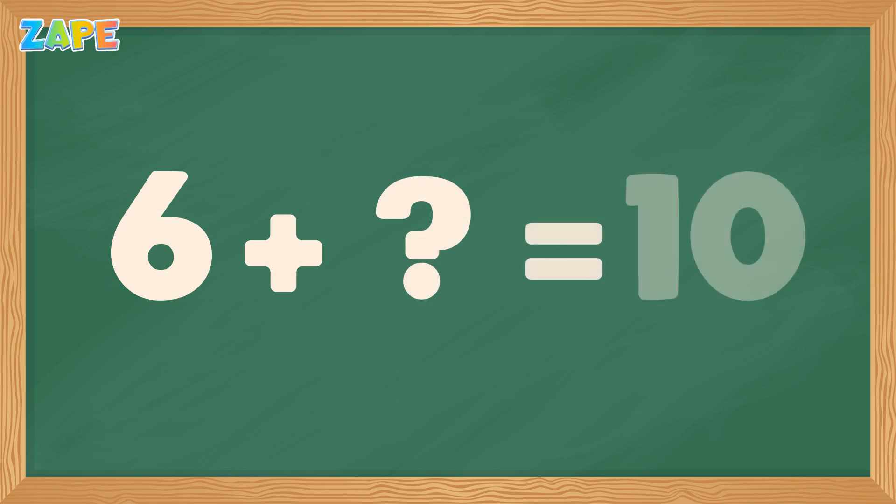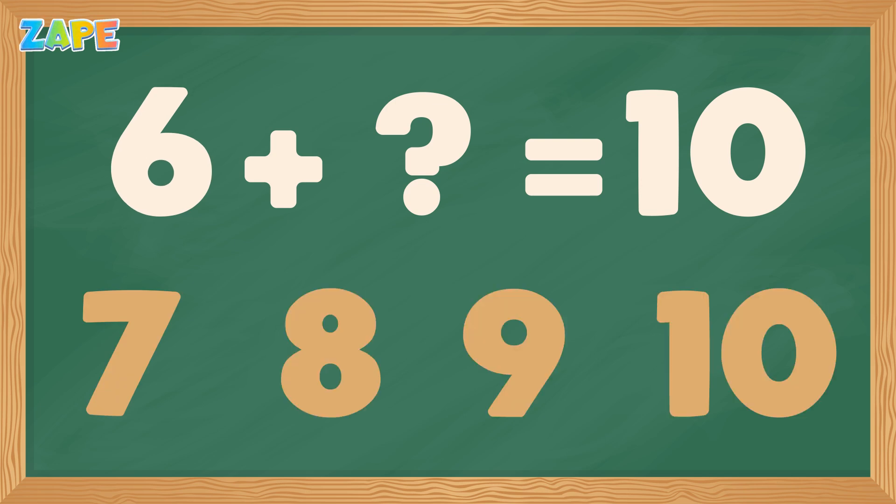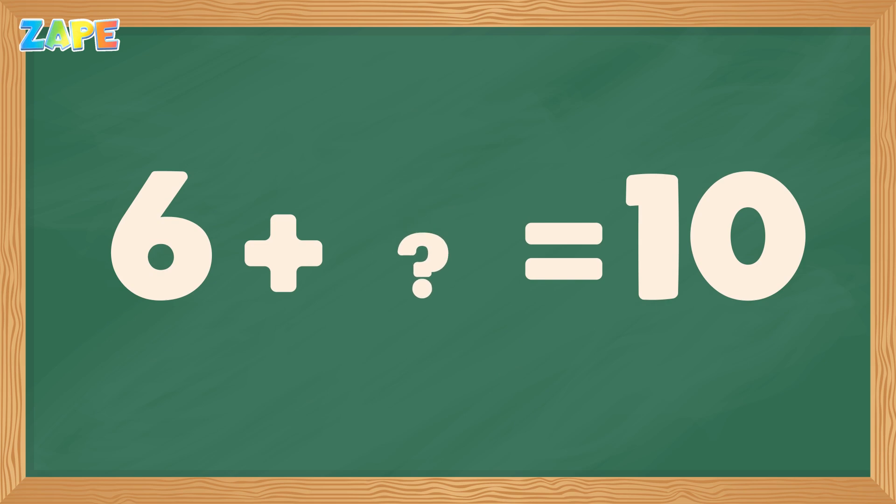Let's solve another. We have 6 plus missing value equals 10. Let's count from 6 up to 10. 6, 7, 8, 9, 10. That's 4 steps. So, the missing number is 4.